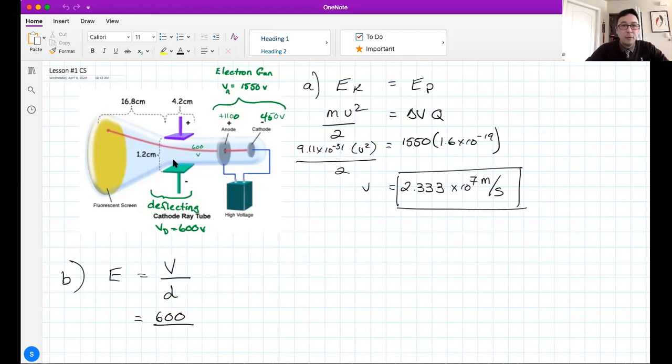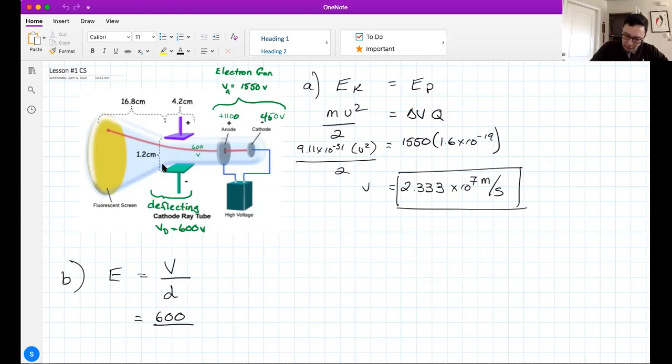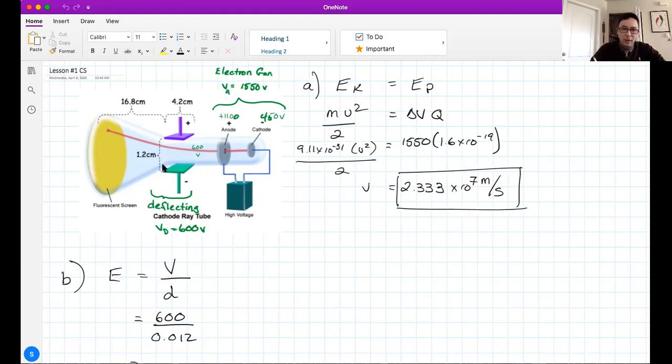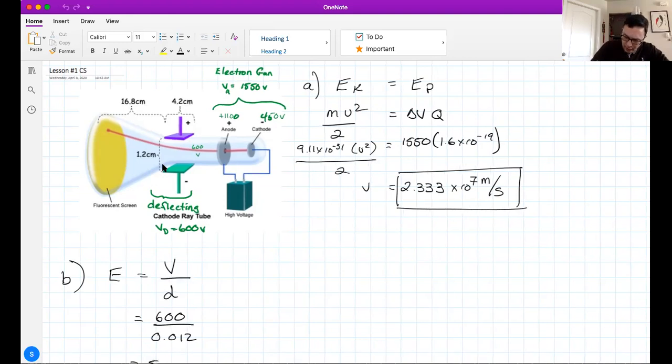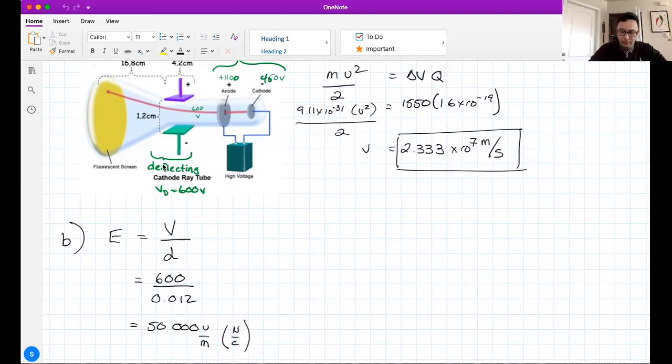The voltage between the two plates is 600. For distance, there are two distances with respect to plates: the distance across the plates, 4.2 centimeters, and the distance between the plates, 1.2 centimeters. That's the one we want, and it's got to be in meters: 0.012. Run that calculation, 600 divided by 0.012, and I get 50,000 volts per meter electric field strength, or newtons per coulomb.